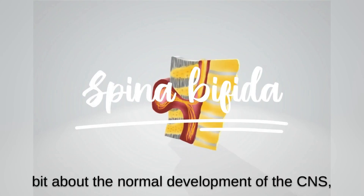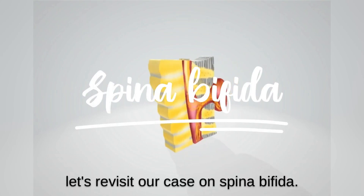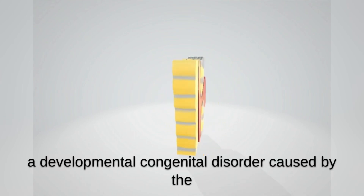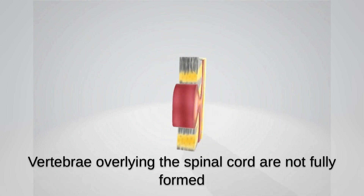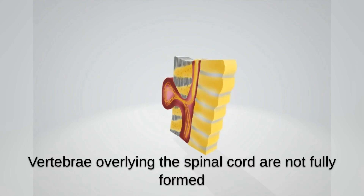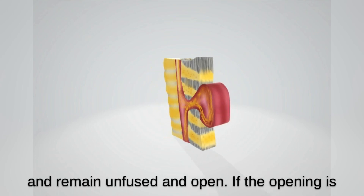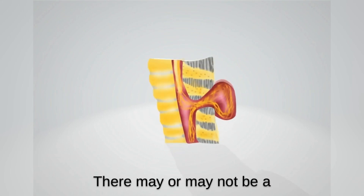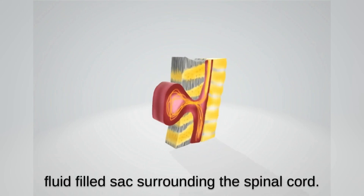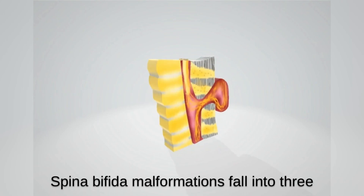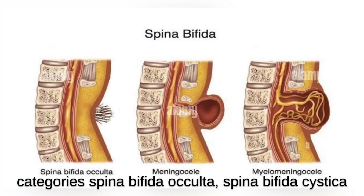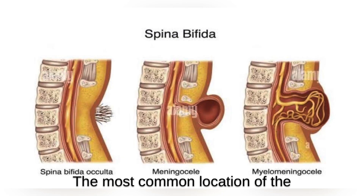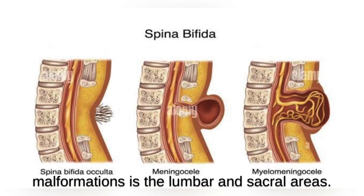Now that we've learned about the normal development of the CNS, let's revisit our case on spina bifida. Spina bifida, Latin for 'split spine,' is a developmental congenital disorder caused by the incomplete closing of the embryonic neural tube. Some vertebrae overlying the spinal cord are not fully formed and remain unfused and open. If the opening is large enough, this allows a portion of the spinal cord to protrude through the opening in the bones. There may or may not be a fluid-filled sac surrounding the spinal cord. Spina bifida malformations fall into three categories: spina bifida occulta, spina bifida cystica with meningocele, and spina bifida cystica with myelomeningocele. The most common location of the malformations is the lumbar and sacral areas.